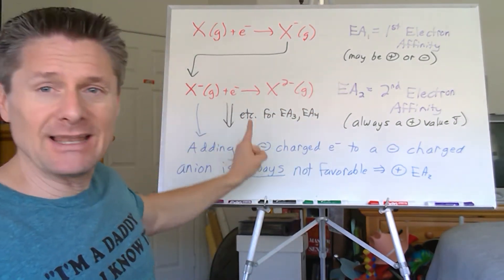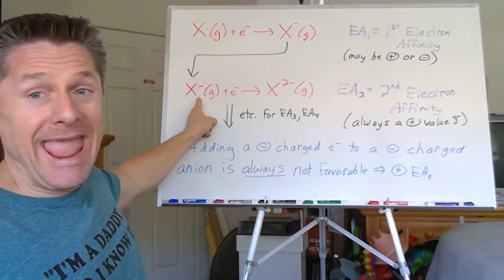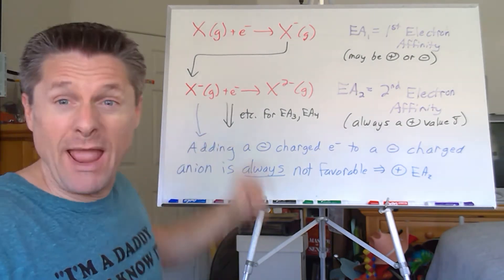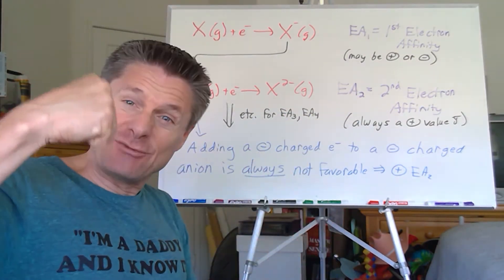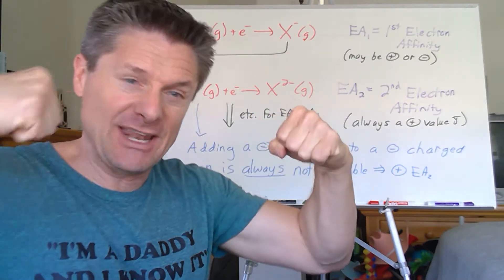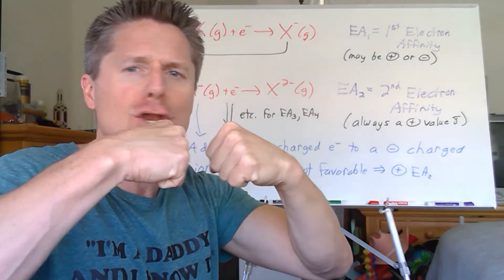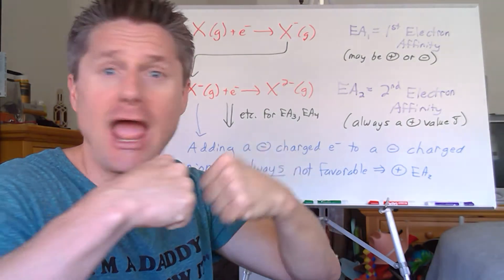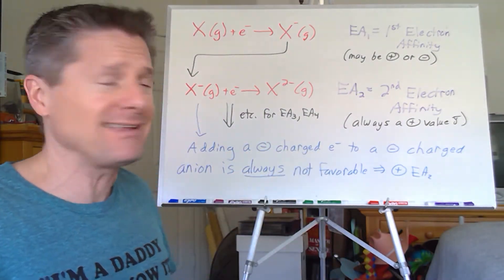But the second electron affinity — if you're taking an anion, remember, you've already had an electron, and you're trying to cram another electron onto it. The electron's negative, the anion's negative. Negative charges repel — not happy. That's not a favorable process. Anytime you're trying to add an electron to a negatively charged species, and the more negatively charged it is, the more dramatic the repulsion.